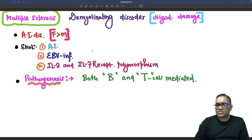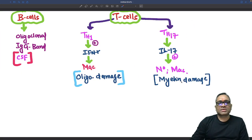Pathogenesis of multiple sclerosis is both B cell and T cell mediated damage. B cells form oligoclonal IgG bands on CSF examination, which is a non-specific finding. T cells show involvement of both Th1 and Th17.